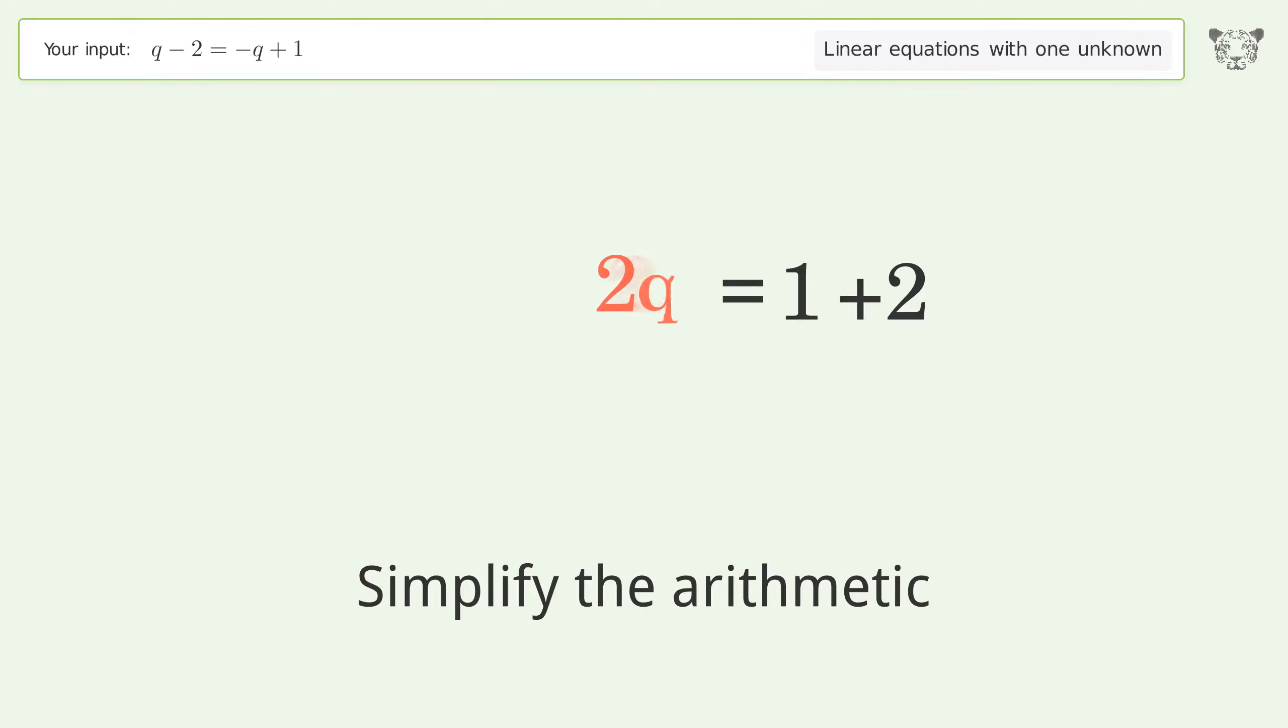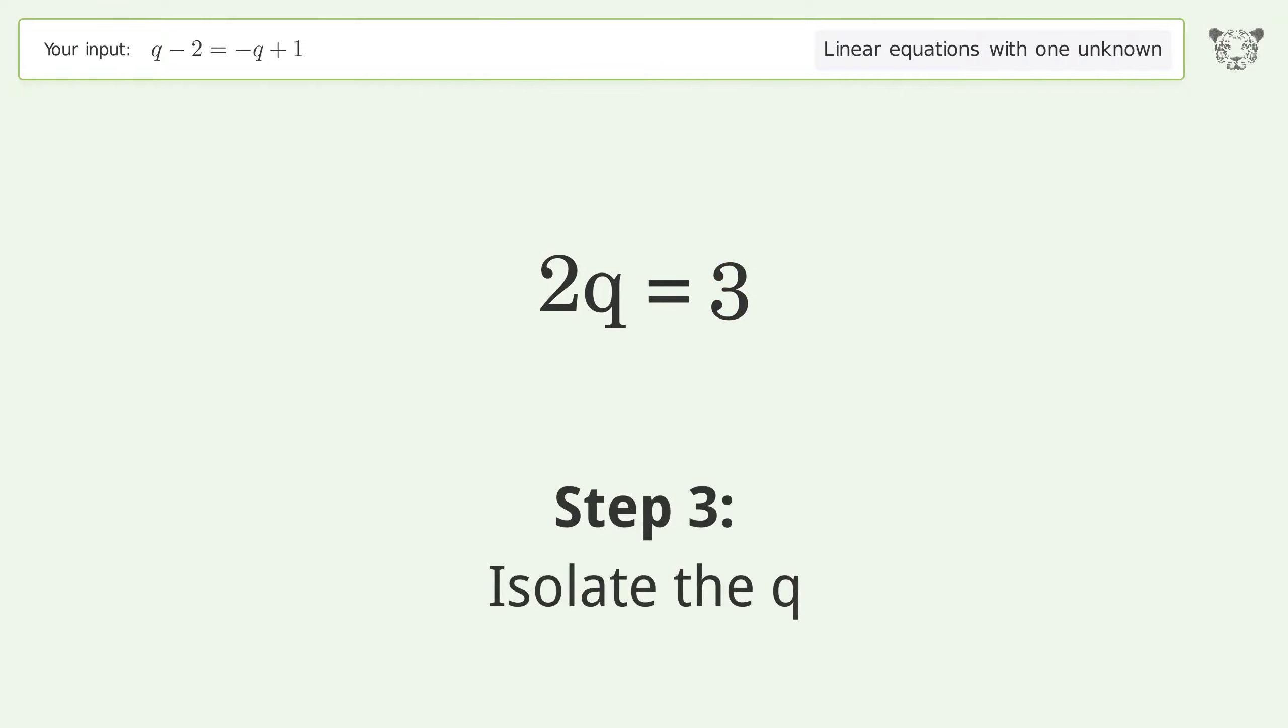Group all constants on the right side of the equation. Add 2 to both sides and simplify the arithmetic.